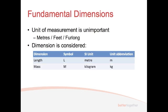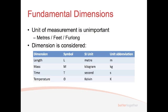For mass, we denote that with the symbol M. The SI unit for mass is kilogram, denoted kg. We also have time — that's a fundamental dimension — denoted with the letter T. The SI unit for time is seconds, denoted s. Then there are three more, which are called auxiliary dimensions: temperature, denoted with the symbol capital Theta, with SI unit Kelvin.